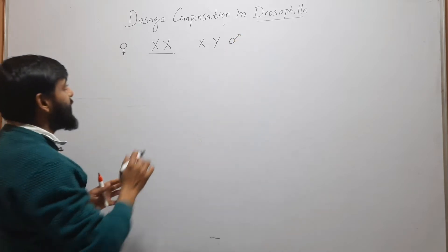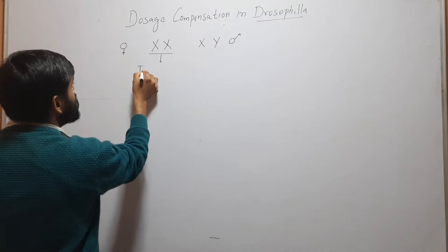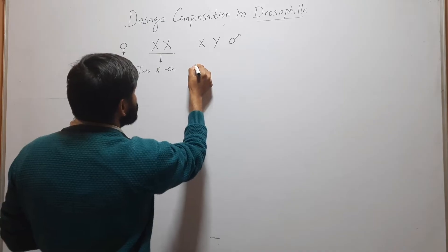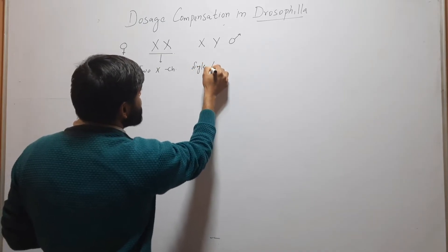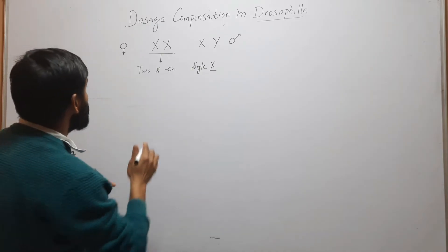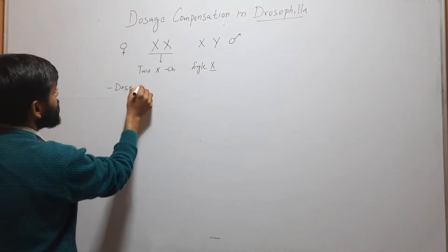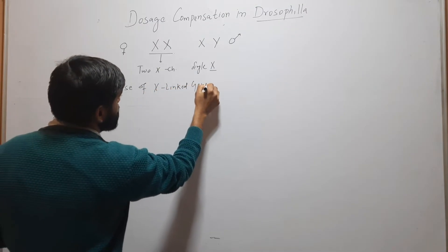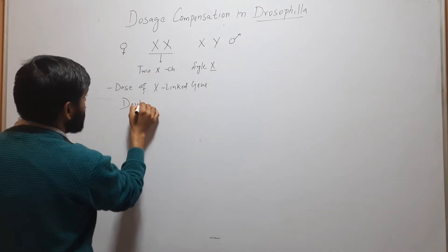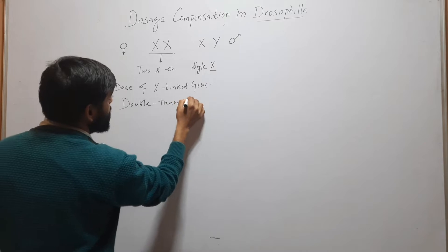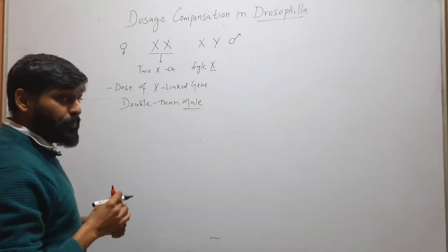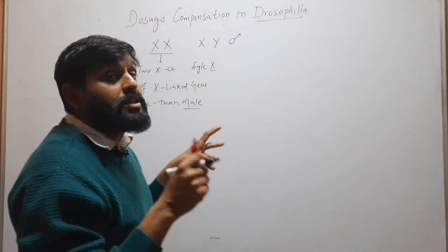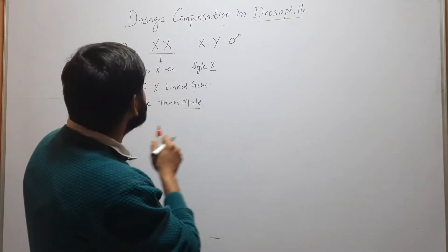Here you can see that females have two X chromosomes but males have a single X chromosome. So the dosage of X-linked genes is double in females compared to males, but we know that the dosage should be equal. So how is this dosage equalized in both male and female?